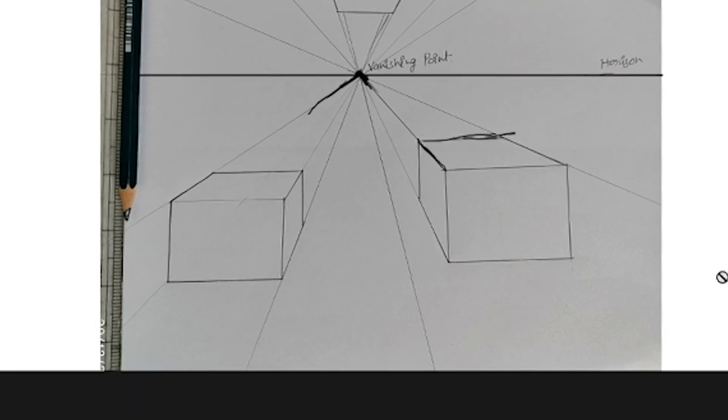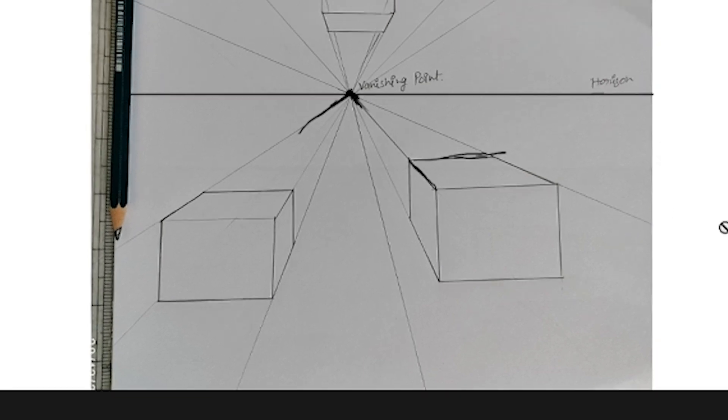In this perspective, all the lines meet in one point. This is a vanishing point. If we make this square box, our eye level is on the horizon line, and on this line will be on the horizon line.